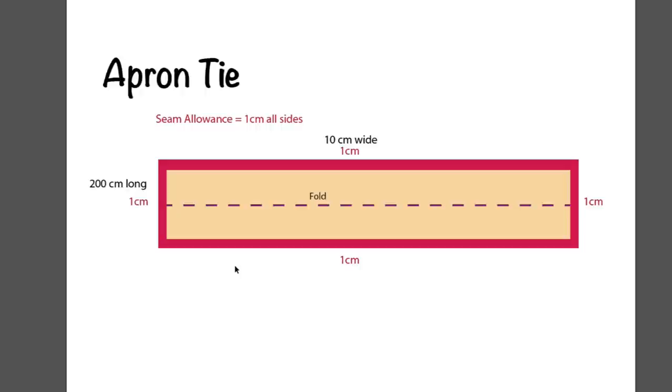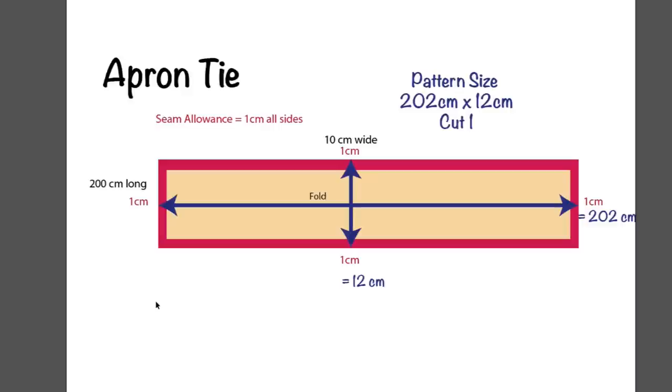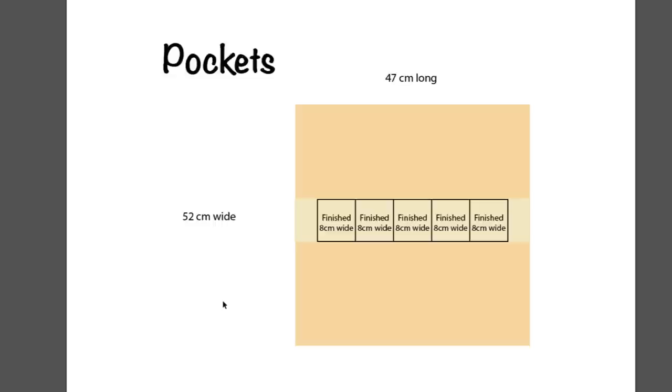The seam allowance for the apron tie again would be 1 cm to each side. Now we can determine the overall size of the pattern. We have 10 cm wide plus the two seam allowances is 12, and 200 cm long plus 2 is 202. So our piece will be 202 cm by 12 cm, and we'll cut 1 for the tie.